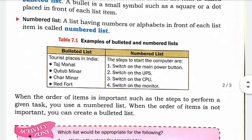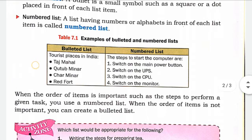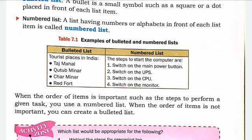For example, a bulleted list might show tourist places in India, where each place has a bullet — a dot symbol — in front of it. This dot form bullet is placed in front of each list item.